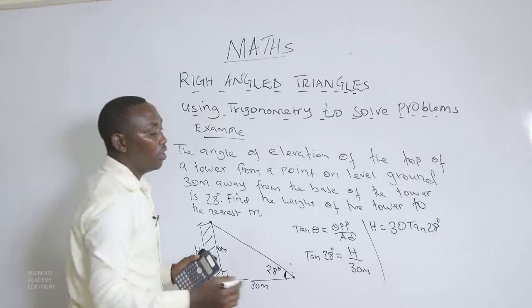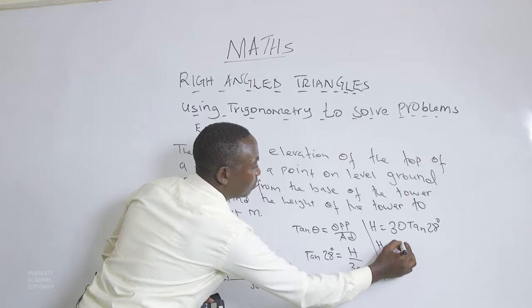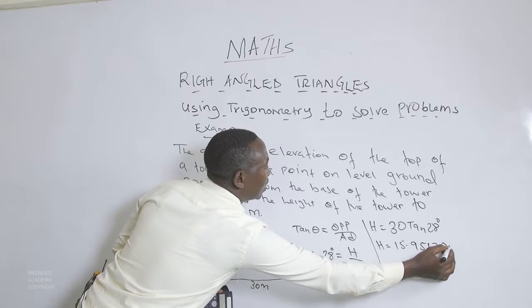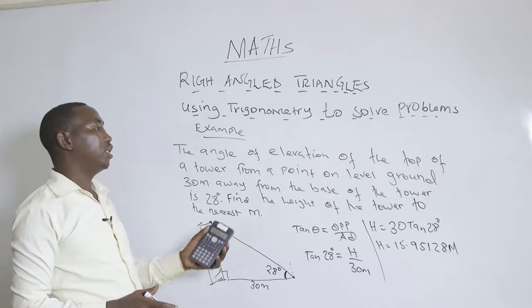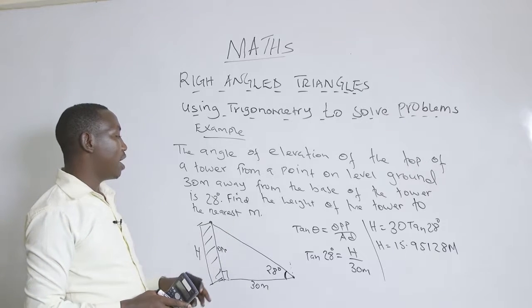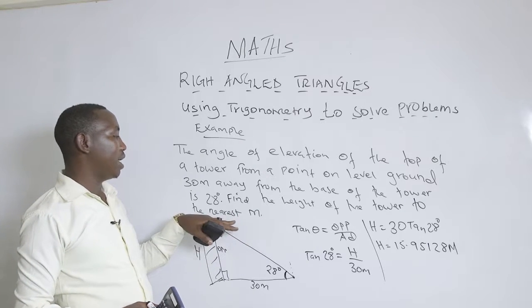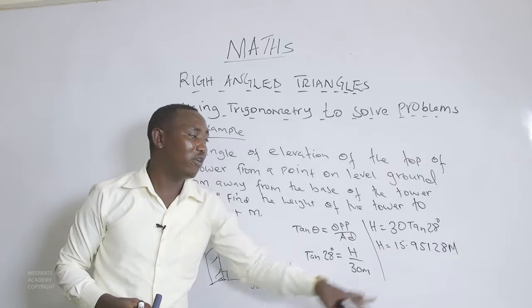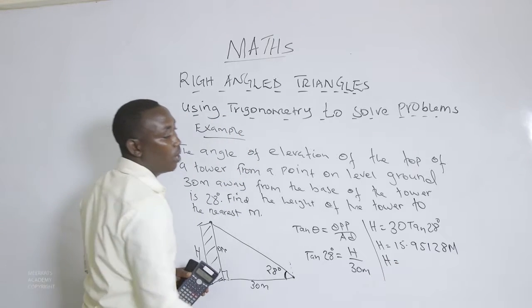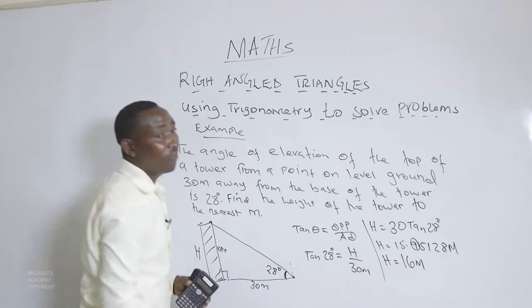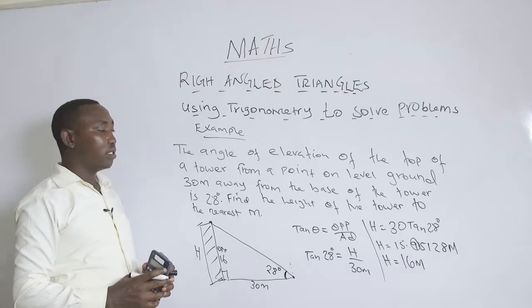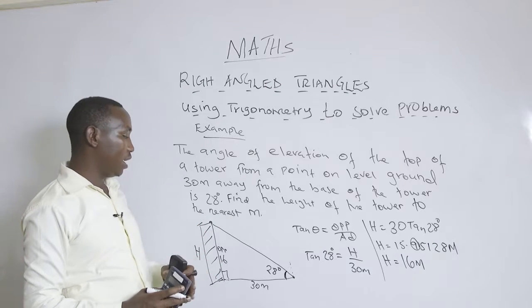We obtained h = 15.95128 meters. But we must go back to the question — we are told to give the answer to the nearest meter. Rounding 15.95128 to the nearest meter: since the digit after the decimal is 9 (greater than 5), we round up, giving 16 meters. Therefore, to the nearest meter, the height of the tower is 16 meters.